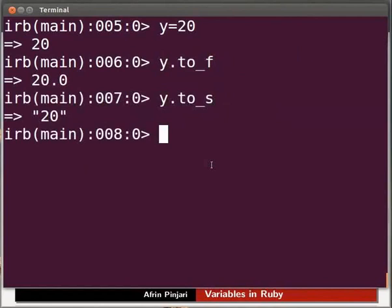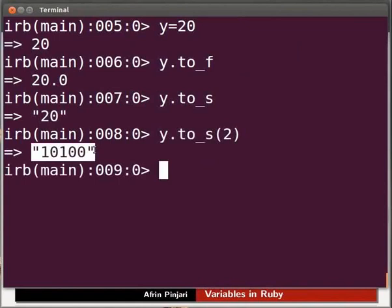To convert variable y in binary form, give number base as 2 in the to_s method. Press the up arrow key to get the previous command. Type opening bracket 2 closing bracket and press Enter.